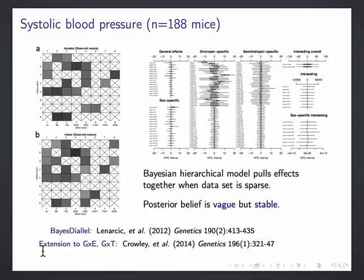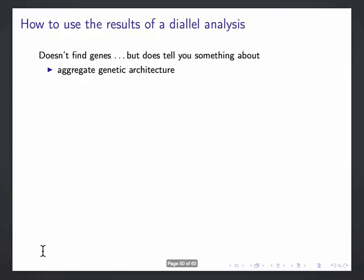We recently extended this to model G by T, gene by treatment effects, in 2014, and we're building further on this at the moment. I said a bit about, I sort of hinted at what one might use the results of a diallel analysis for. Okay, it doesn't find genes, but it does tell you something about aggregate genetic architecture. And if it's telling you something about aggregate genetic architecture, then it should also give you a pretty big hint about what experiments to do next.